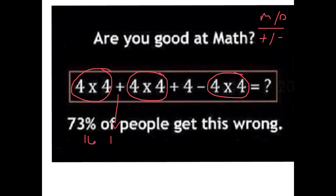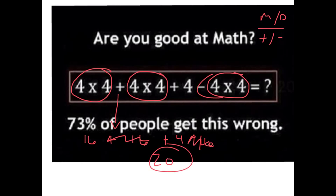Bring down our plus sign — plus 16. Bring down our plus 4 minus 4 times 4. Now that's going to be negative 4 times 4, which is negative 16. Now we just combine all of our stuff — positive 16 and negative 16 cancel out, add those together it's 20, and that's our answer.